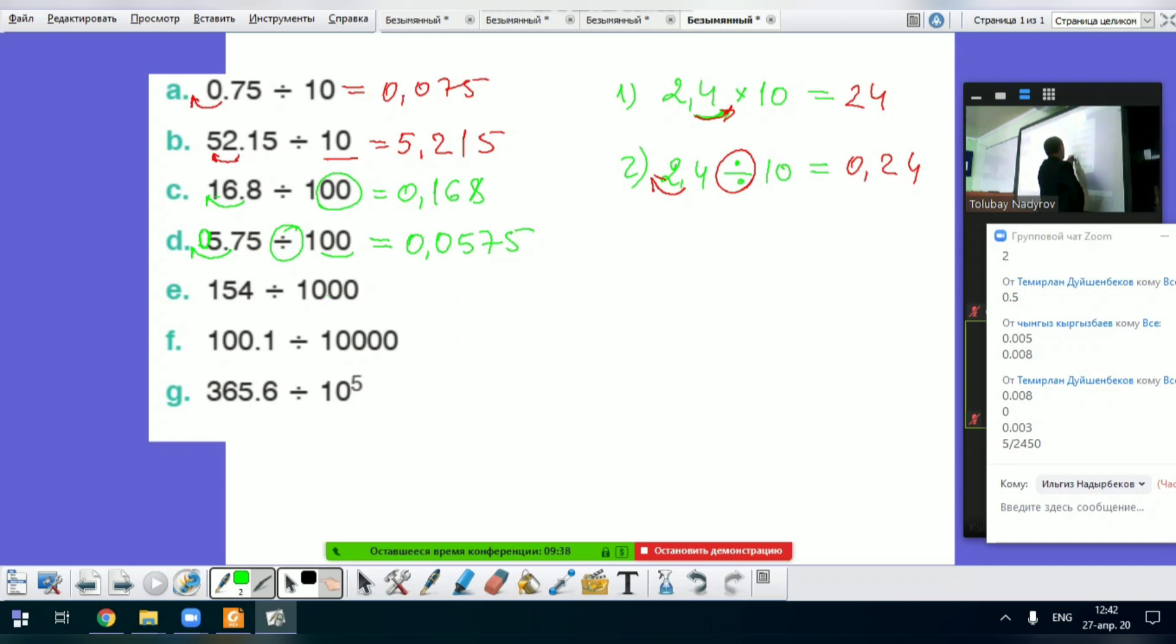And the last e, look at the e one. Decimal point is after the four, okay? Decimal point is here. So the decimal point moves what? Three places to the left side. Why? Because there are three zeros, okay? So it's equal to 0.154.